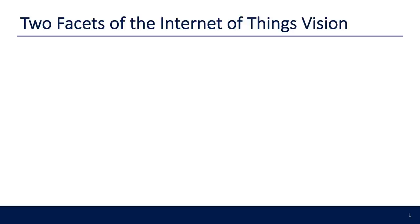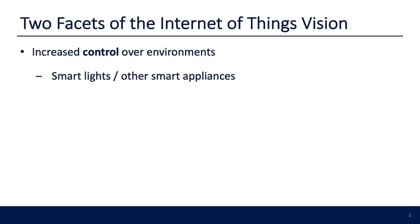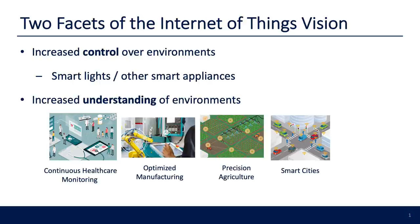First I'll start with the IoT vision. There are two facets to the Internet of Things. The first involves IoT's ability to give us an increased amount of control over our environments — examples include smart lights and smart appliances. The other important facet is its ability to give us an increased understanding of our environments, such as wearables for continuous healthcare monitoring, monitoring factories for optimized manufacturing, precision agriculture, or understanding traffic in smart cities.